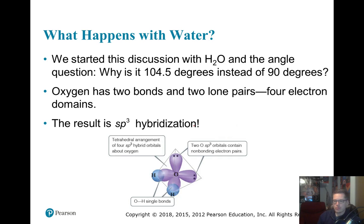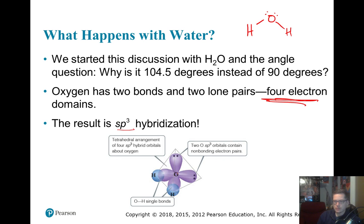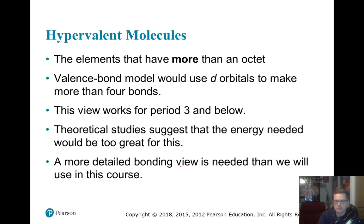Looking back at water: oxygen has two bonds and two lone pairs — that's four electron domains. So it's based off tetrahedral, which is always sp3 hybridization. You need four orbitals total: one s plus three p's equals four. So you get your oxygen's bonding orbitals and lone pair orbitals, all at equal energy levels.